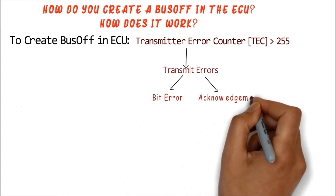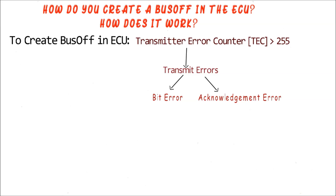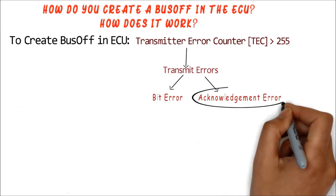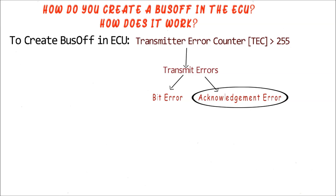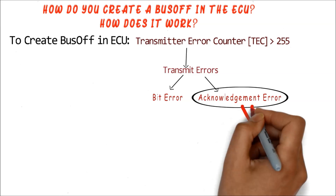The two transmit errors are bit error and acknowledgement error. In order to create an acknowledgement error, you need to make sure that none of the nodes in the network will provide positive acknowledgement to the frame transmitted by your ECU. But handling of the CAN protocol and providing the acknowledgement are completely handled by the hardware of the CAN controller and hence cannot be controlled. So, incrementing TEC by means of acknowledgement error is out of the question.